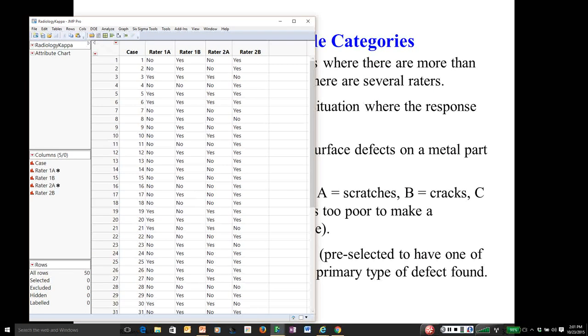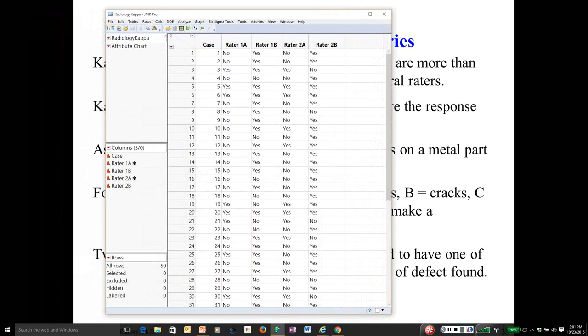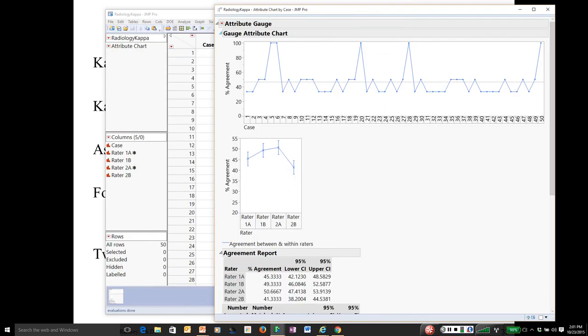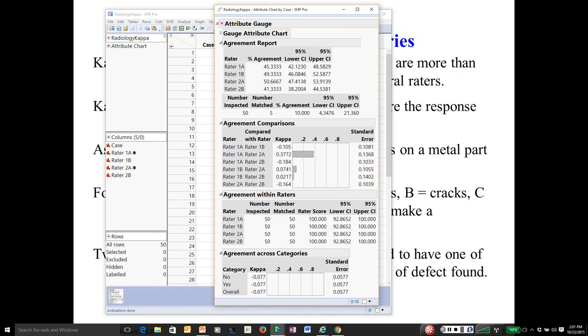This is the kappa study. We would go to Analyze, Quality and Process, Variability Gauge Chart. And I'm just going to put in all the rating columns. And the grouping is by case number. I'm only going to focus on a small part of the output. The only thing that really matters here is the agreement comparisons. You take a look at the kappas. Almost 0. The intra-rater agreement in both cases is nearly 0. At this point, I stop and I say it's obvious they can't agree with each other.